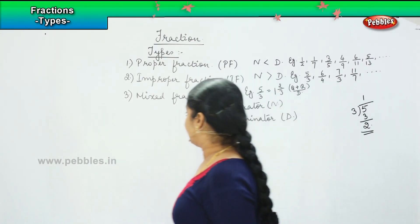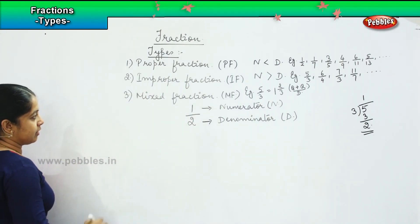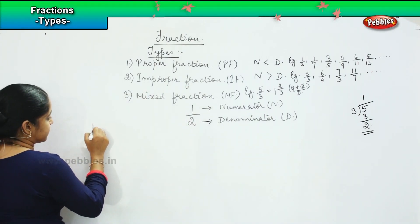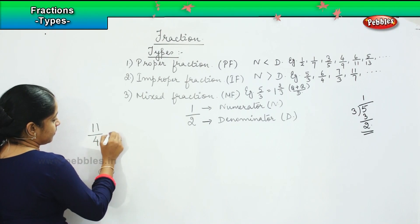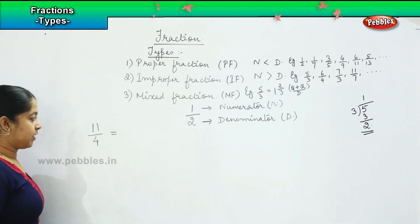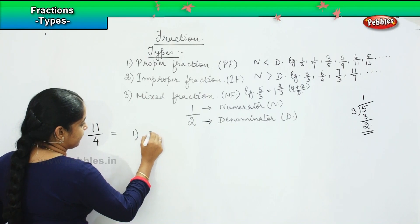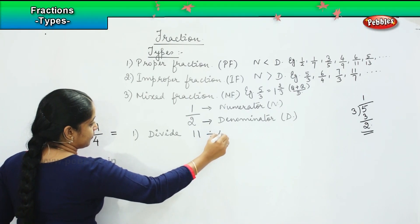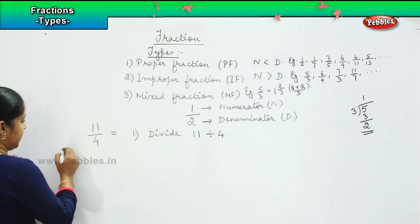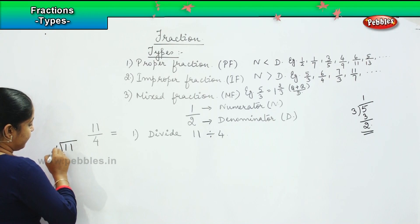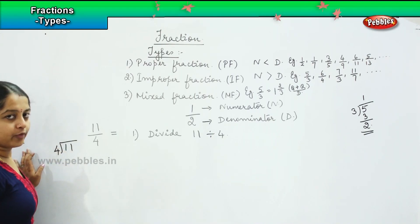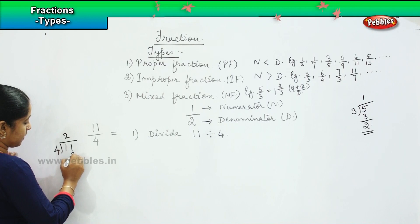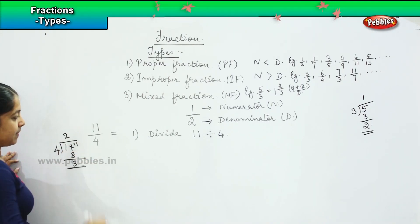Now, similarly, if I say can we solve a few of the mixed fraction here? Now I have to convert say 11 by 4 into mixed fraction. So what am I going to do? The first step that I will do is I will be dividing 11 by 4. So let us divide and see 11 by 4. 4 ones are 4, 4 twos are 8, right? So 2, 8, 11 minus 8 is 3. So 3 is the balance.